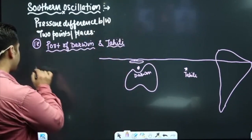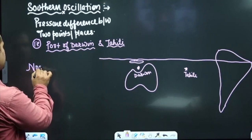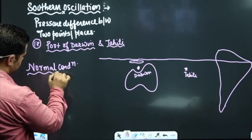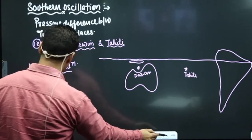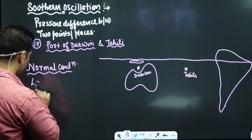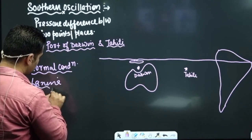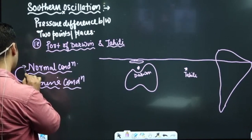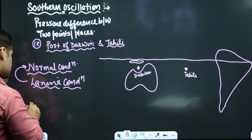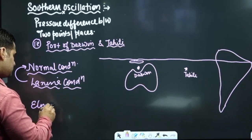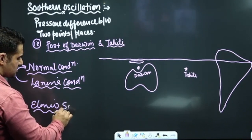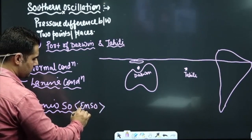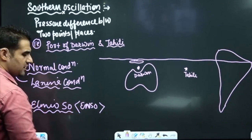So what we will discuss: normal conditions, La Niña conditions — which is the intensification of normal conditions — and then El Niño conditions. El Niño Southern Oscillation, we call it ENSO.